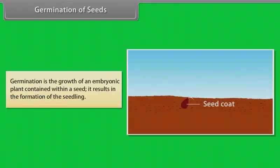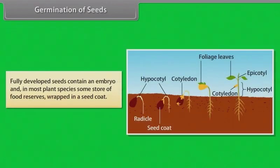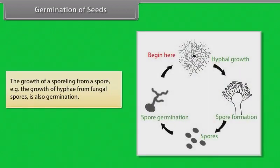Germination is the growth of an embryonic plant contained within a seed; it results in the formation of the seedling. Fully developed seeds contain an embryo and, in most plant species, some store of food reserves wrapped in a seed coat. The growth of a sporeling from a spore — for example, the growth of hyphae from fungal spores — is also called germination.